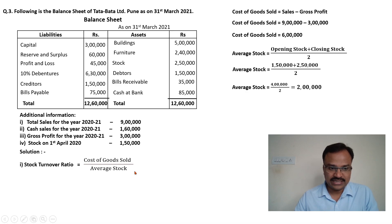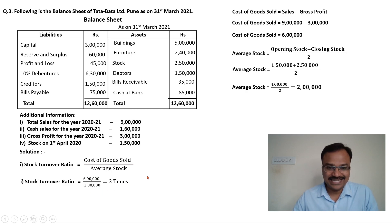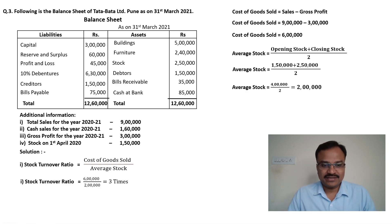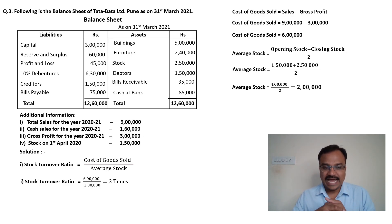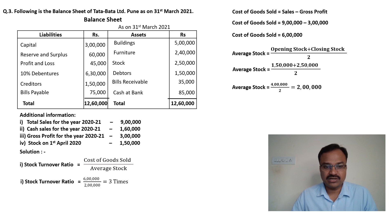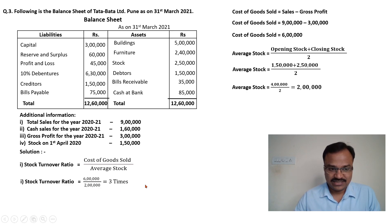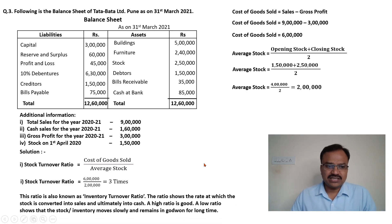Now we have cost of goods sold which is 6 lakh and average stock rupees 2 lakh, so we can put these amounts into the formula. Cost of goods sold 6 lakh rupees divided by average stock 2 lakh rupees gives us 3. This ratio is expressed in times - as we discussed, activity ratios like stock turnover ratio, debtors turnover ratio, and creditors turnover ratio are expressed in times. So stock turnover ratio is three times.